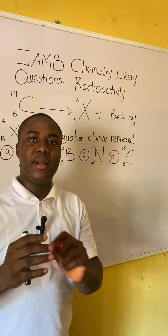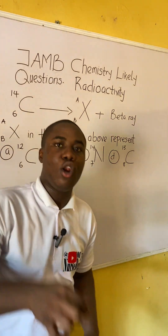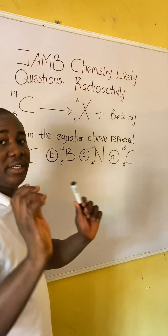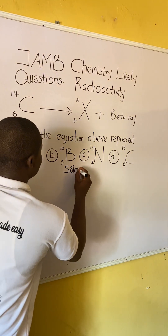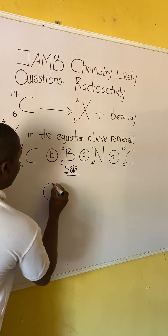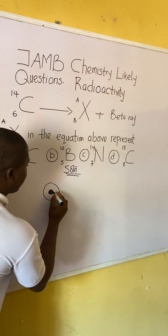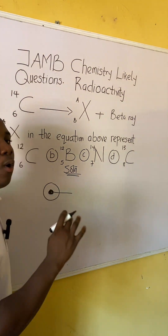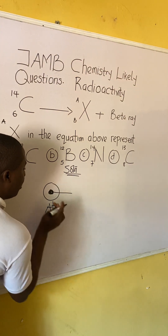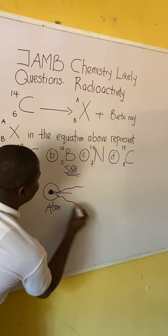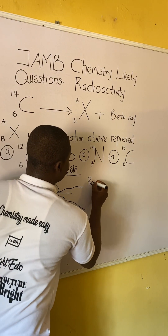Radioactivity is simply the spontaneous emission of radiation from the nucleus of an atom. All atoms in chemistry have a centrally located nucleus. Radioactivity is the spontaneous emission of radiation from that nucleus. So when the nucleus starts emitting radiation, that is radioactivity.